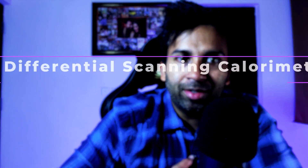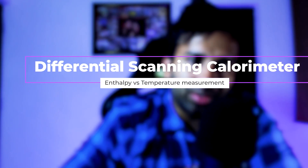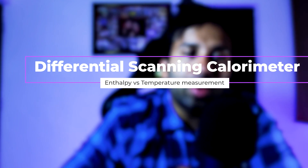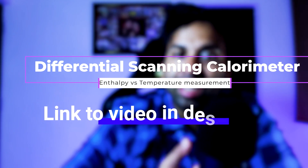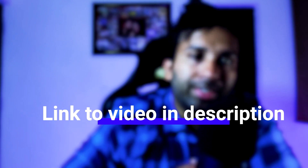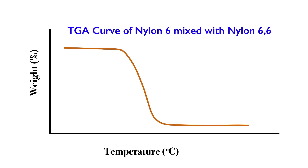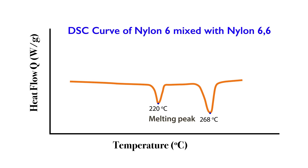DSC, or differential scanning calorimetry, measures the enthalpy as a function of temperature. So this is used to identify any thermal events that are happening, for example crystallization, melting, and so on. How this is used in conjunction with TGA is when the TGA degradation of two polymers coincide, it will be really hard to quantify or find out the differences. In this case, DSC in the form of melting peaks can help to identify what these polymers are.